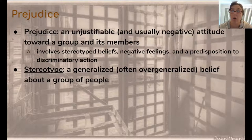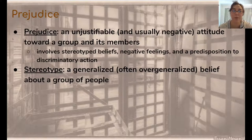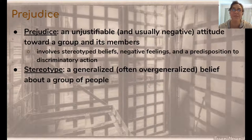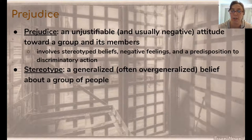Prejudice isn't always associated with negative beliefs about a group, but the vast majority of the time it is. Another key point is 'unjustifiable.' It's not unjustifiable to assume that the person at the top of your class is smart — that's not prejudice. Prejudice is when it's not based on something from actually getting to know a person. It involves stereotyped beliefs — beliefs that are over-exaggerated, over-generalized about a group of people — negative feelings, and a predisposition to discriminatory action.